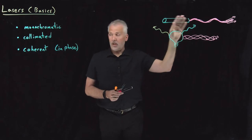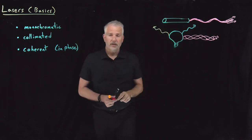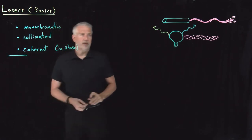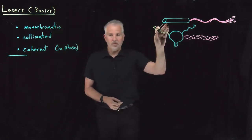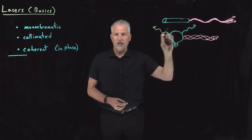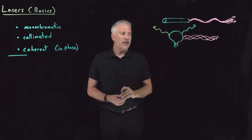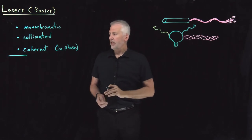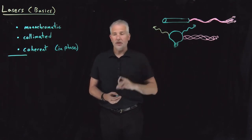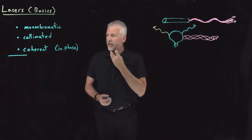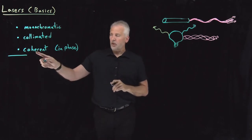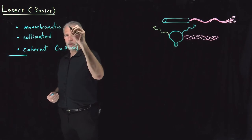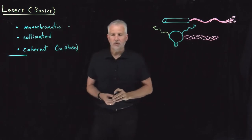Those are the three characteristics of a laser: monochromatic, collimated, and coherent. The next question becomes how do they get that way — what is special about the construction of a laser that produces this monochromatic, collimated, and coherent beam that a light bulb does not? Let's take those features one at a time, starting with monochromaticity, which is probably the easiest to explain.